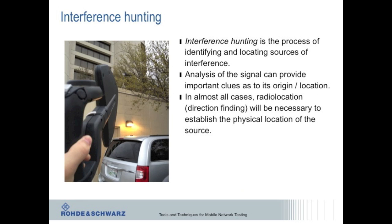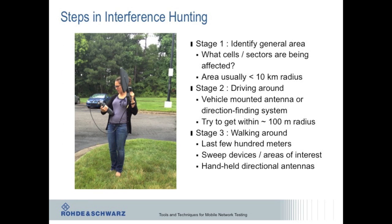This brings us to our last phase in mobile network operation: interference hunting. Even the best-designed, installed, and maintained network can suffer severe performance degradation or even complete failure if external interference is present. Interference has shown itself to be a significant issue in LTE networks, and new services such as VoLTE mean that the importance of interference will continue to increase. In almost all cases, the only way to resolve interference is to hunt it down using direction finding and radio location to find the physical source of the interferer. In my experience, interference hunting can be divided into three general stages, the first being identifying the general area where interference is affecting the network.